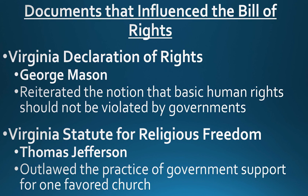The Virginia Declaration of Rights was written by fellow Virginian George Mason, reiterating the notion of basic human rights that governments cannot violate — Madison explicitly stated those rights. The Virginia Statute for Religious Freedom, written by Thomas Jefferson, outlawed government support for only one favored church and guaranteed the right of religious freedom to all people in Virginia. Madison drew upon both of these documents when drafting the actual Bill of Rights.